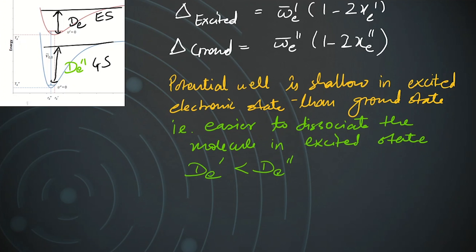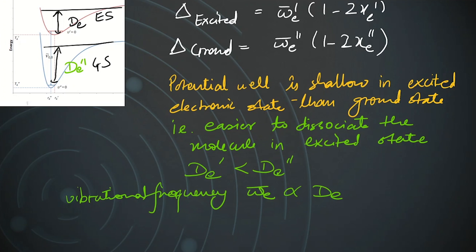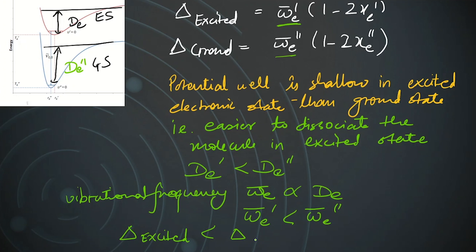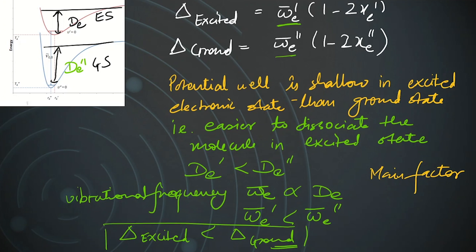The vibrational frequency ω̄_e is directly proportional to the dissociation energy. Since less dissociation energy is required in the excited state, the vibrational frequency is smaller in the excited state than in the ground state: ω̄_e′ < ω̄_e″. Therefore, the spacing in the excited electronic state is less than in the ground state. The main factor producing this difference is the vibrational frequency.